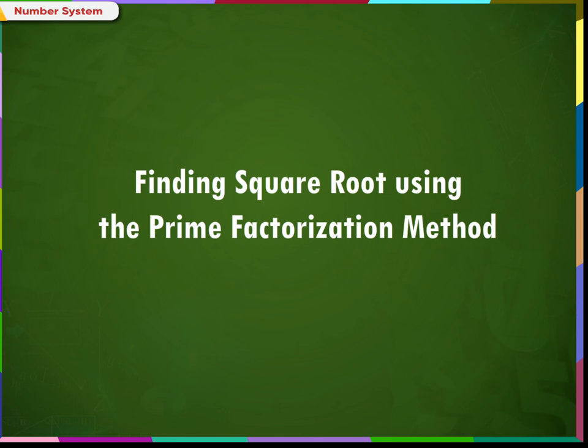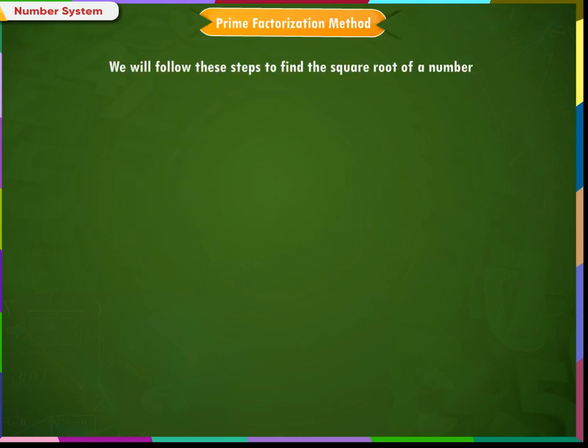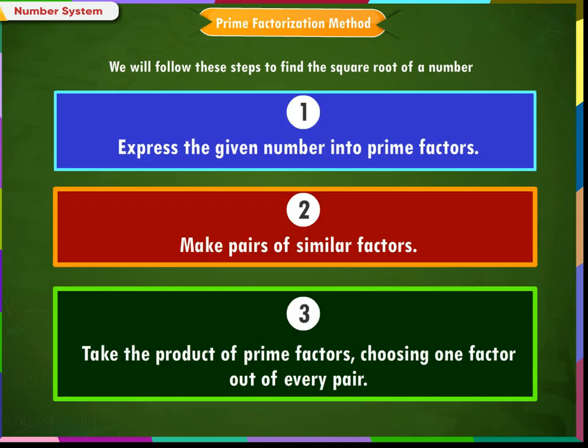Finding square root using the prime factorization method. We will follow these steps to find the square root of a number. Step 1: Express the given number into prime factors. Step 2: Make pairs of similar factors. Step 3: Take the product of prime factors, choosing one factor out of every pair. Let us understand this concept with an example.